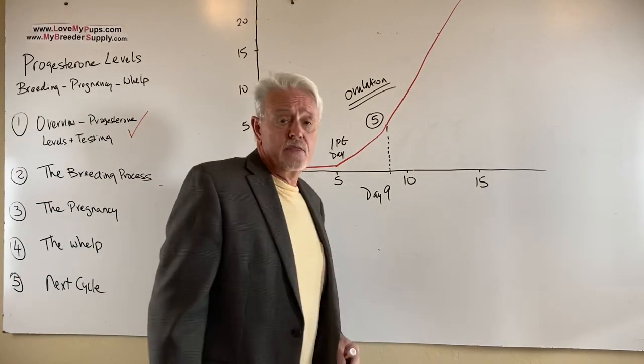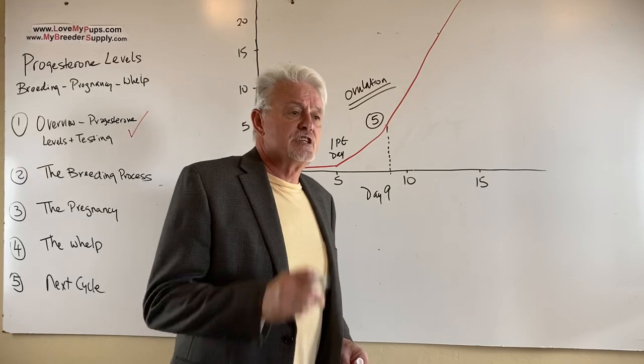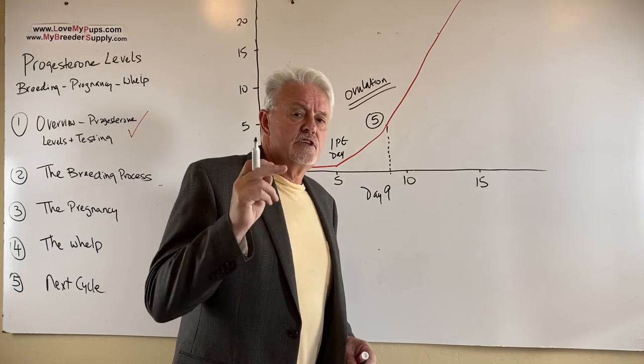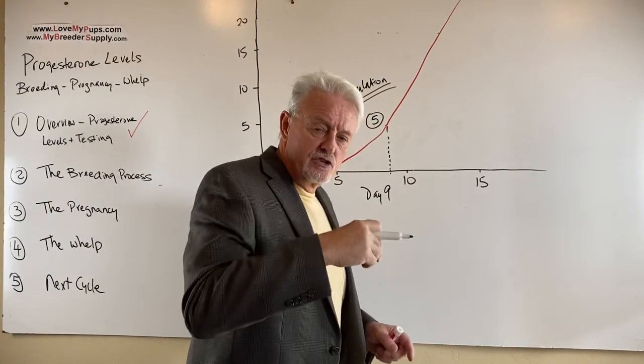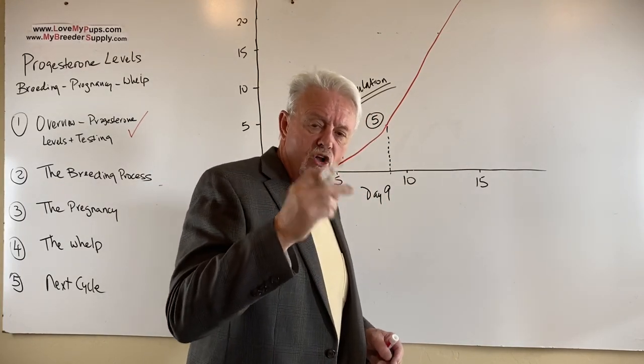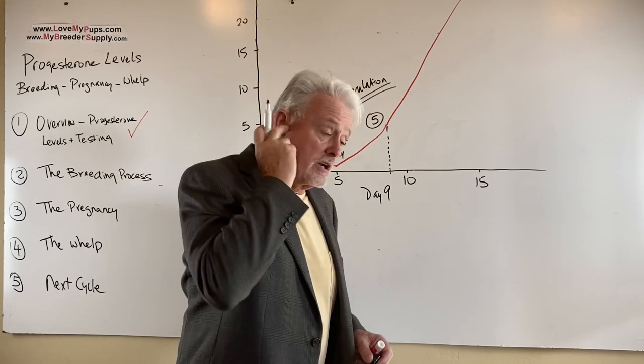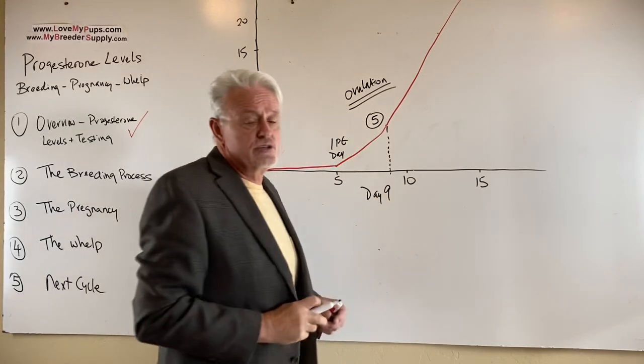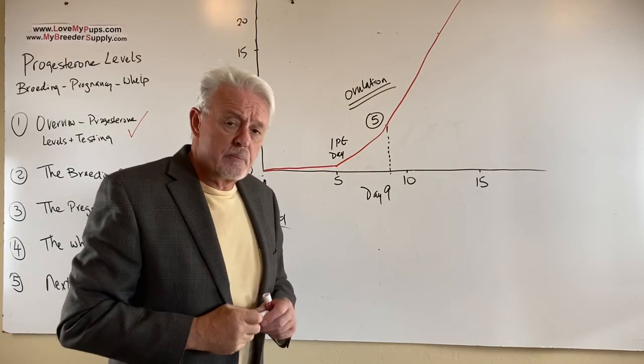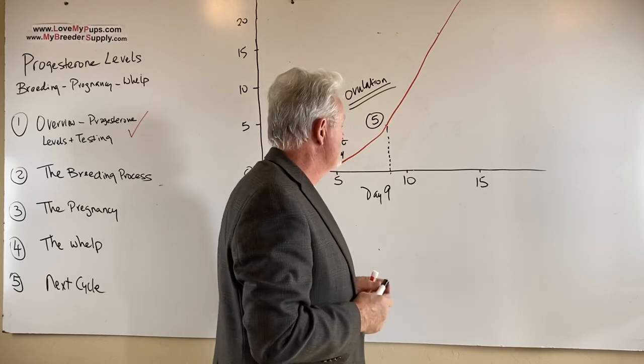Why don't we breed the dog the day that it ovulates? Because it takes a couple of days for the eggs to come from where the ovulation takes place into the uterus wall and be two days along to be mature enough to be fertilized. So presenting semen right here at day five would be two days early. That could still end up in a pregnancy, but certainly would not be the optimum time.